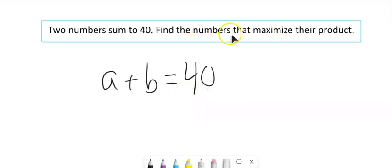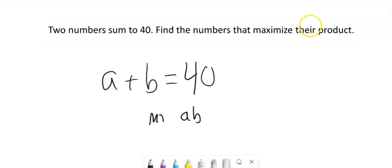So A plus B is 40, and I want to find the numbers that maximize the product. So what I want to do is maximize them multiplied together.